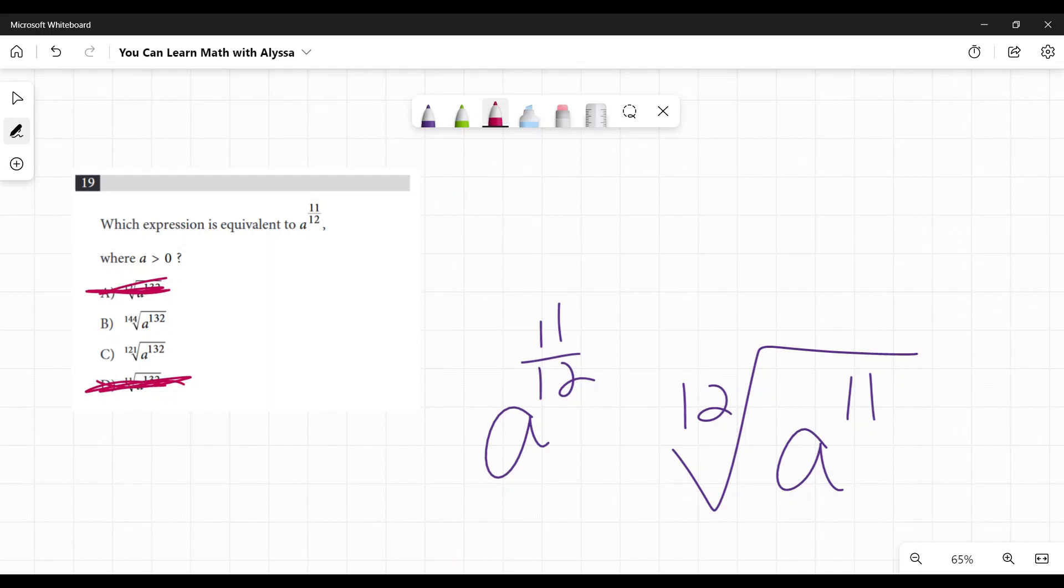So what am I left with? A to the power of 132. And it's the 144th root of that. Or the 121st root of a to the power of 132. So in both cases, I have a to the power of 132 inside. What I'm going to do is I'm going to change both of these into this format. Because remember, I can go back and forth. So this first one, B, would be a to the power of 132 over 144. And the second one, C, would be a to the power of 132 over 121.